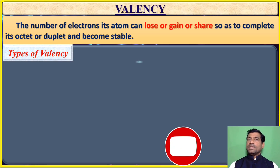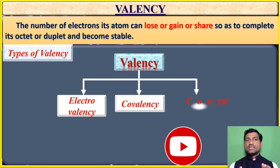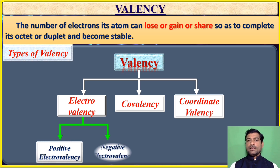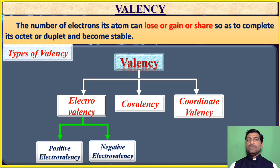Valency is the number of electrons an atom can lose, gain, or share so as to complete its octet or duplet and become stable. Some atoms can lose their electrons, some atoms can gain electrons, and some atoms can share electrons to complete their outermost orbit and become stable — that is called valency.